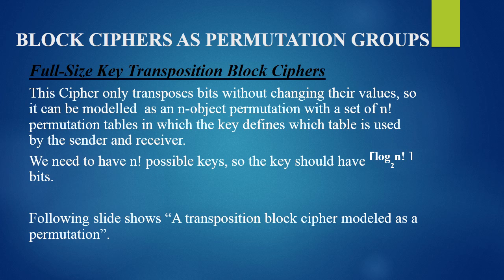A full-size key transposition block cipher can only transpose its bits without changing their values. So it can be modeled as an n-object permutation, with a set of n-factorial permutation tables, where the key defines which table is used by the sender and receiver. For it to be a full-size key cipher, we need a key that can map to any one of the n-factorial outputs, so the key should be of size log base 2 of n-factorial bits.